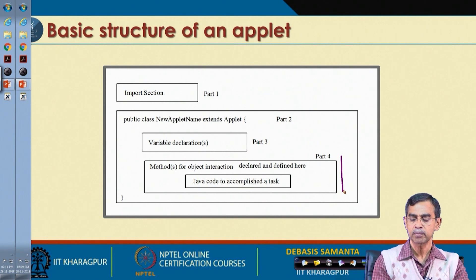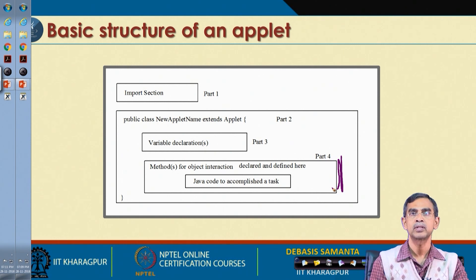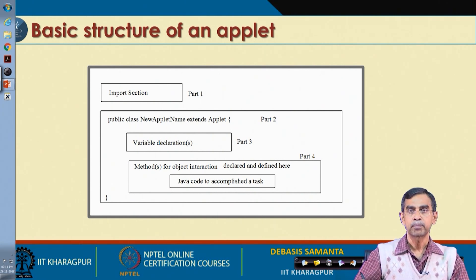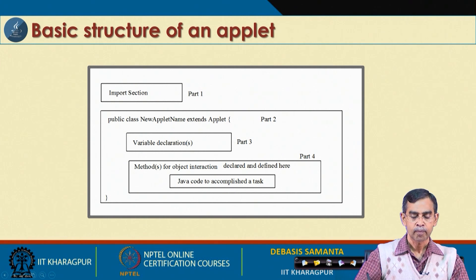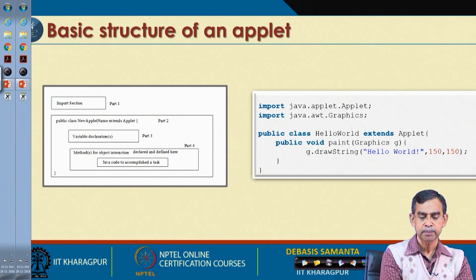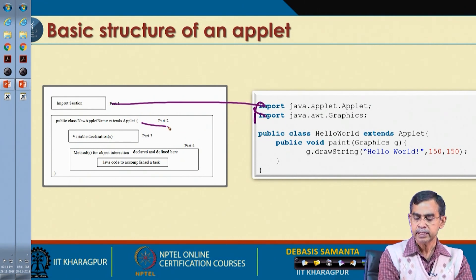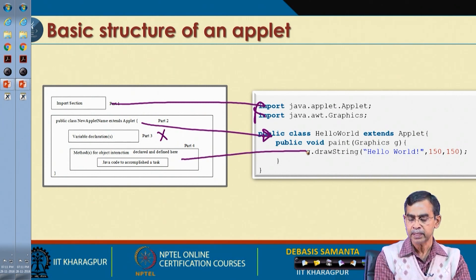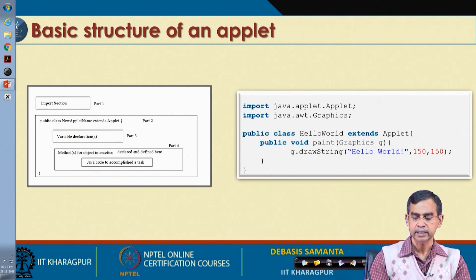We can even write an Applet without a method part — it will just display a blank Applet and do nothing. So altogether there are four parts: the import section, the class declaration, the variable declaration, and the method declaration. Not all parts are mandatory — some are optional. For example, the variable declaration can be ignored if not needed.